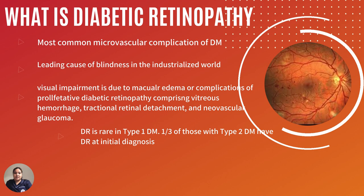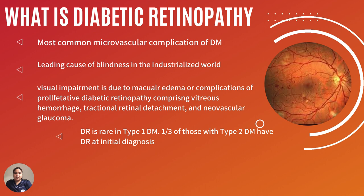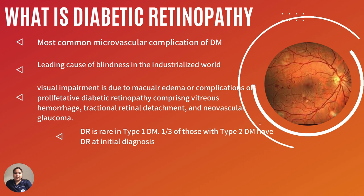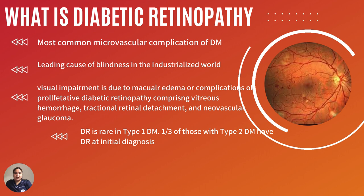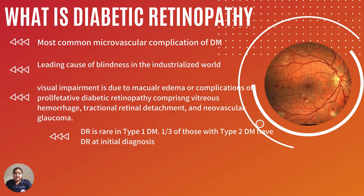Diabetic retinopathy is the most common microvascular complication of diabetes mellitus and the leading cause of blindness in the industrialized world. Visual impairment is due to macular edema or complications of proliferative diabetic retinopathy, comprising vitreous hemorrhage, tractional retinal detachment, and neovascular glaucoma.